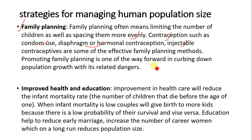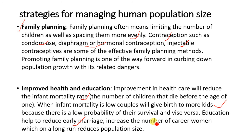Another way of managing human population is to improve health and education. Improvement in healthcare will reduce the infant mortality rate — that is the number of children that die before the age of one. When infant mortality is low, couples will give birth to fewer kids because there is a higher probability of their children's survival, and vice versa. Education helps to reduce early marriage and increases the number of career women, which in the long run reduces population size.